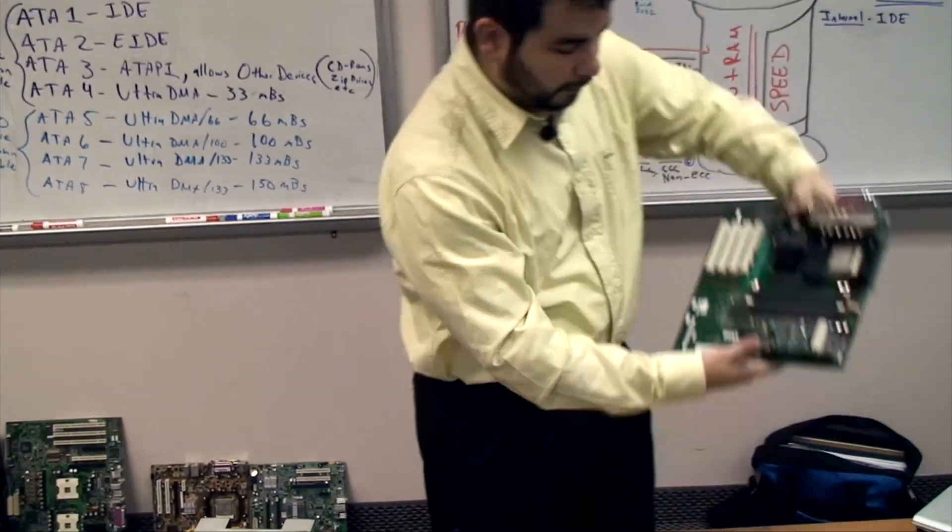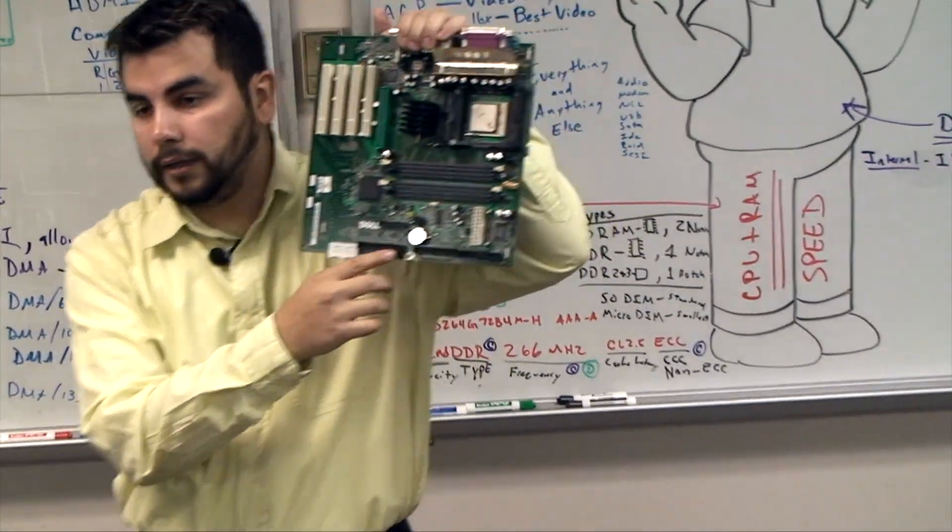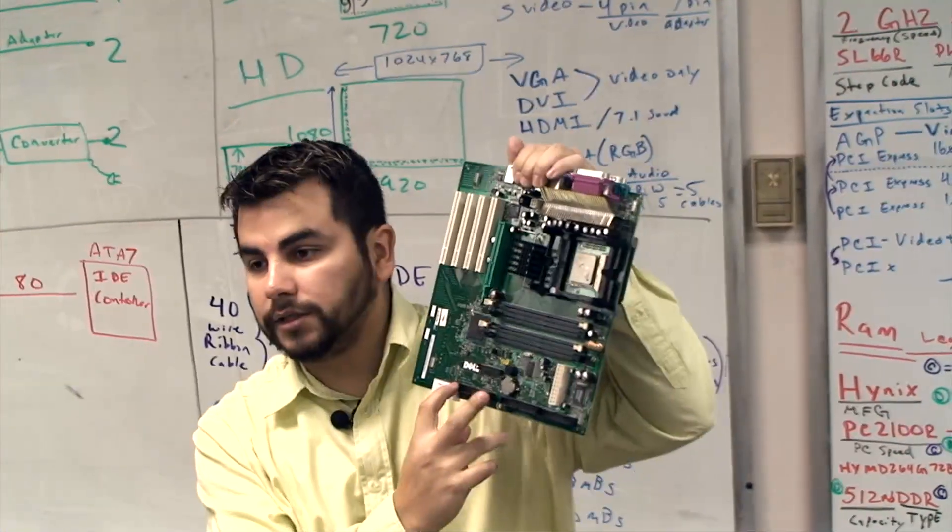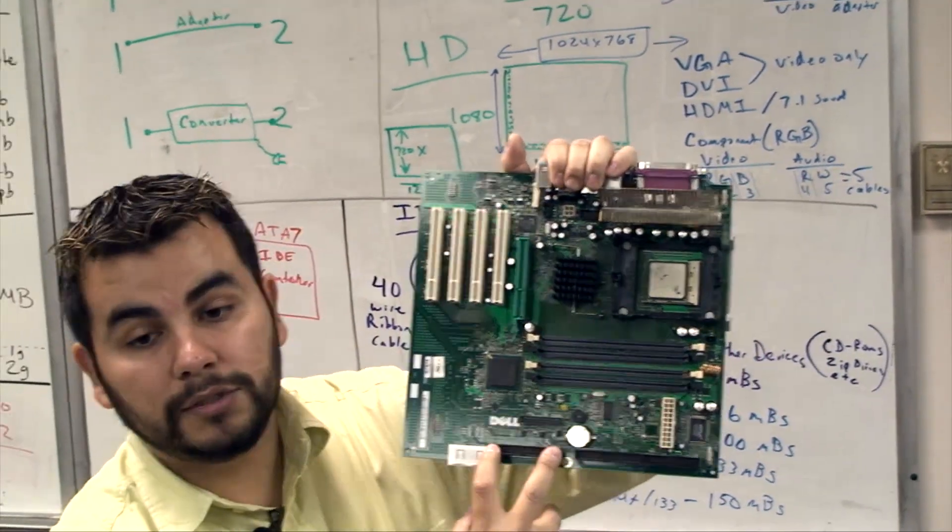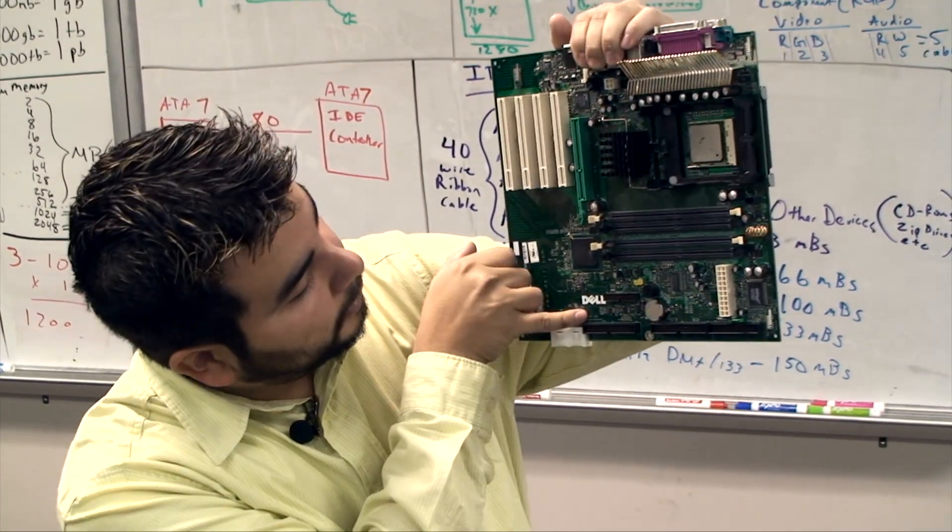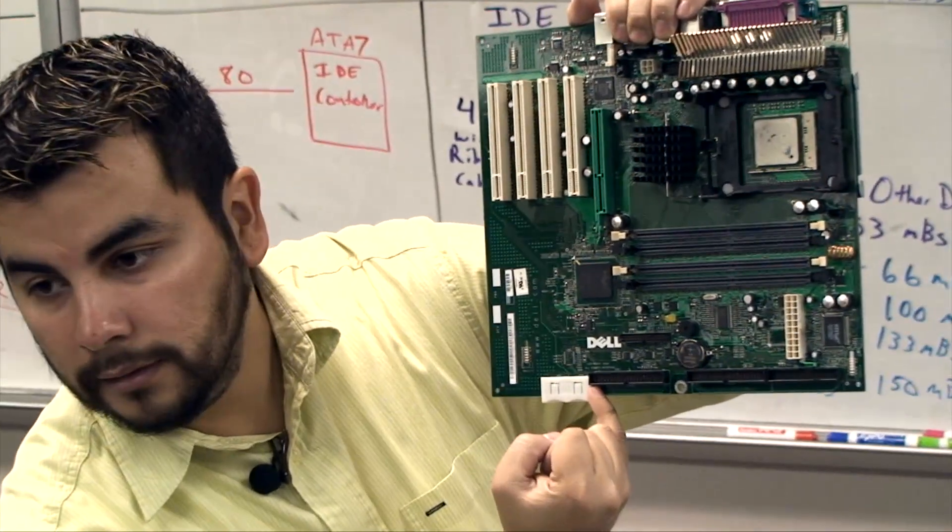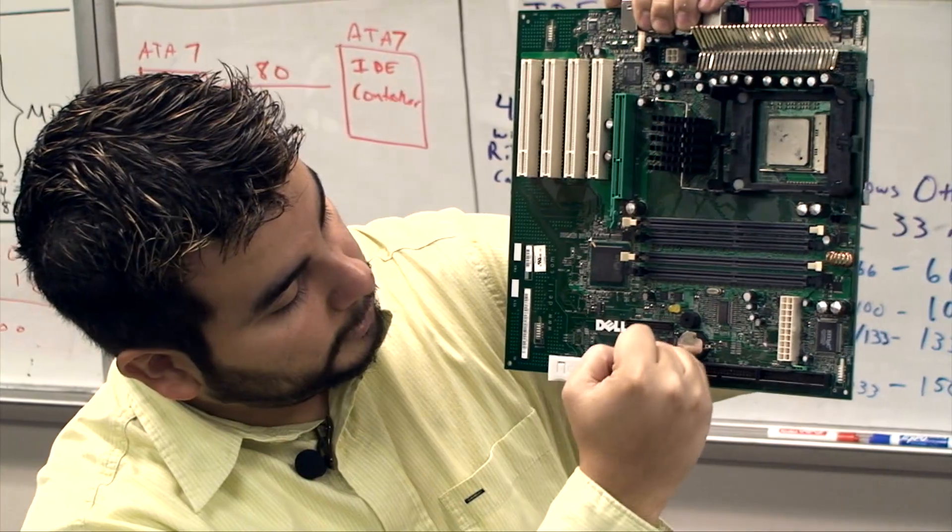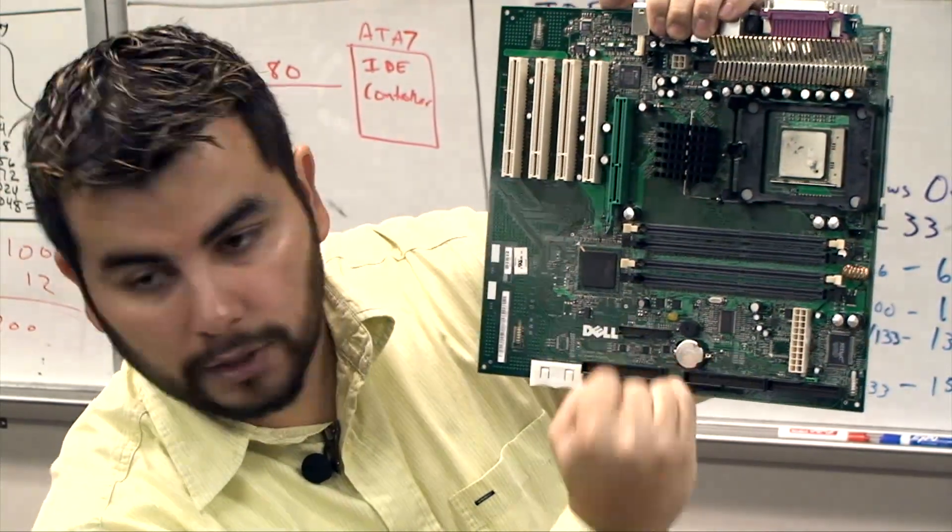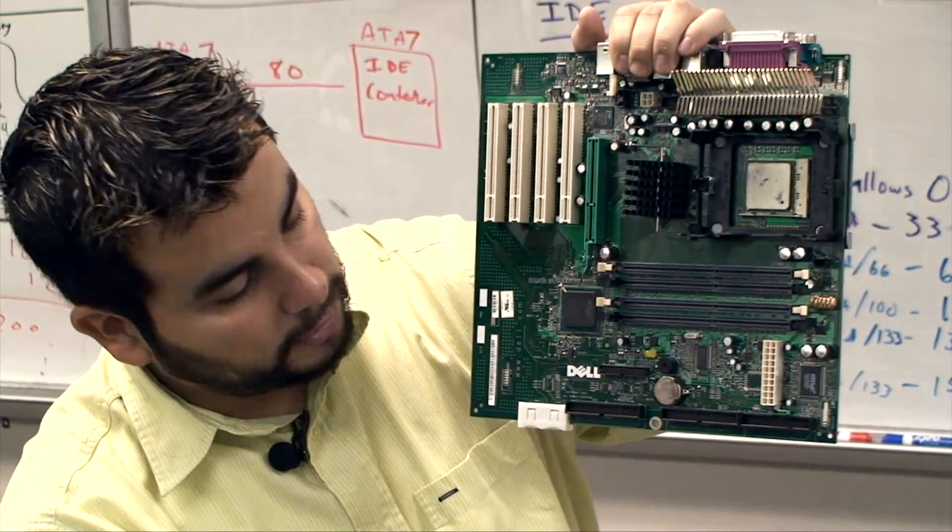So now we look at our motherboard and we look for a 1 or a 40 on either one of the two connections, either one of the two sides of the connection. So if you look in IDE 1, up on top I have a 2, which means right under that is 1. So 40 is on top over here because it goes 1, 2, 3, 4, 5, 6, 7, 8, 9, 10, all the way to 39 and 40.